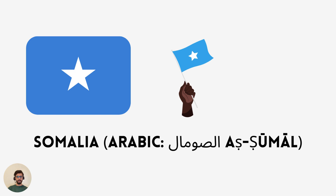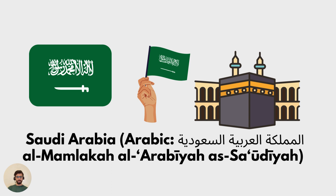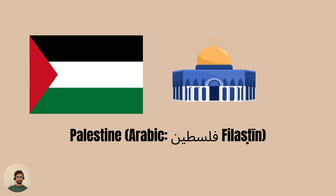We have Somalia, and we say: El Somal. Can you repeat after me? El Somal. We have Saudi Arabia — in Arabic we say: El Mamlaka El Arabia El Saudi. Can you repeat? El Mamlaka El Arabia El Saudi. Or you can say just El Saudi for short.